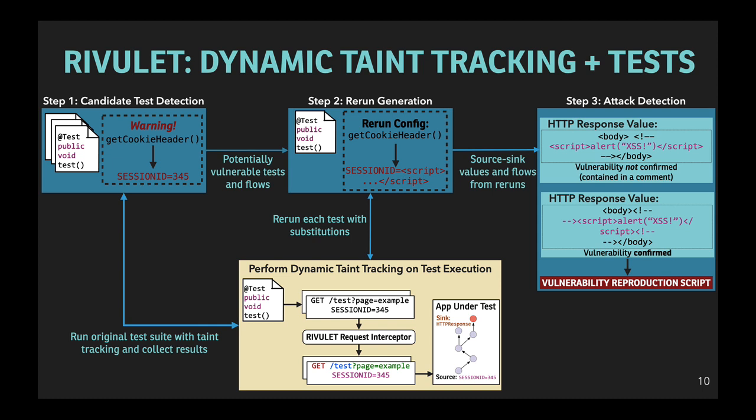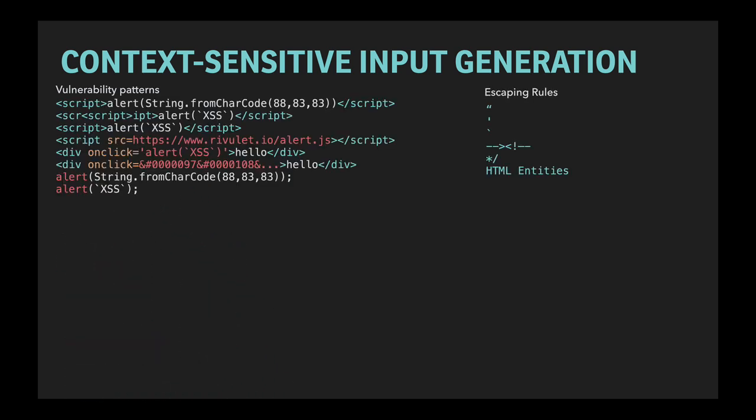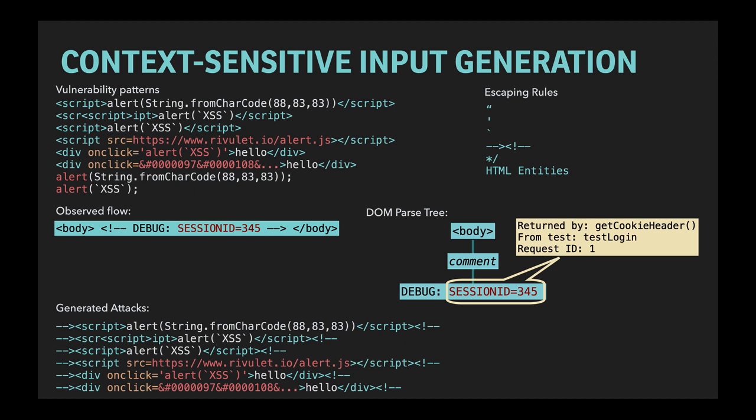While this example shows Rivulet detecting a cross-site scripting vulnerability, we use the same approach to detect SQL and Java expression injection too. Recall that one of the limitations of penetration testing is that there is a humongous number of possible attack strings to test. Rivulet condenses all of these hundreds of potential possibilities into just eight vulnerability patterns with several escaping rules. It then leverages its dynamic data flow analysis to determine the precise context of a user-controlled input within the overall attack. For instance, continuing the same example where a session ID header flows into an HTML comment in a page returned to a user, Rivulet can tell that the input ultimately flows into the comment and hence only generate inputs that can break out of that kind of comment — it doesn't need to try all of the other possible combinations.